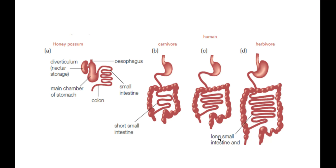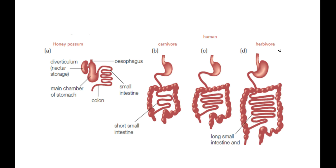This picture shows the comparisons between the digestive systems of those things we are required to look at in the dot point. We've included a human just so we can see the comparison between our carnivore, our grazing herbivore and our mostly nectar feeding organism. We've chosen the honey possum as our predominantly nectar feeding organism. A carnivore could be any carnivore you'd like to investigate, and for the grazing herbivore you can pick any such as a cow, a horse, a goat, a deer or a kangaroo.